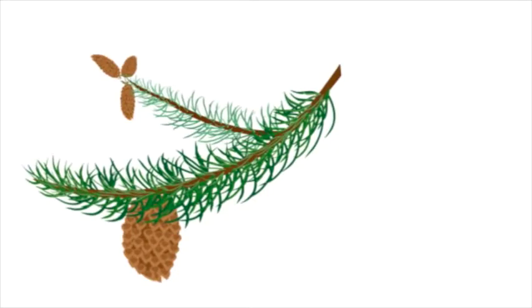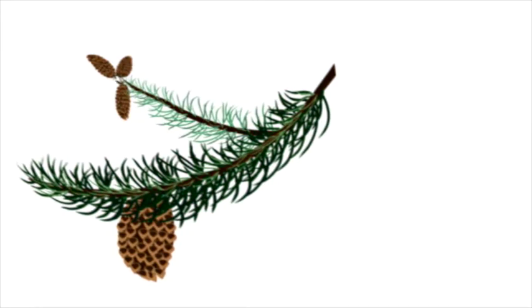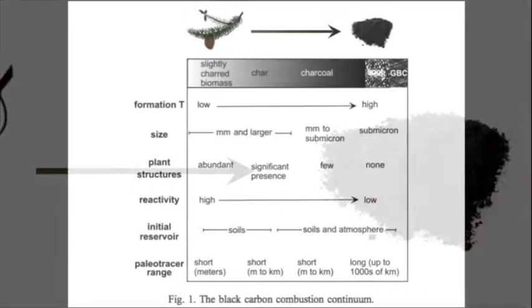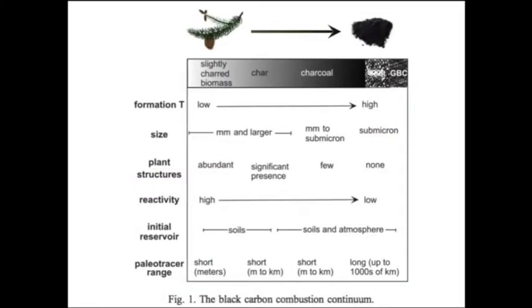Pyrogenic carbon can take many forms, from lightly charred, readily degradable material to highly condensed soot. This range of forms is referred to as the combustion continuum.